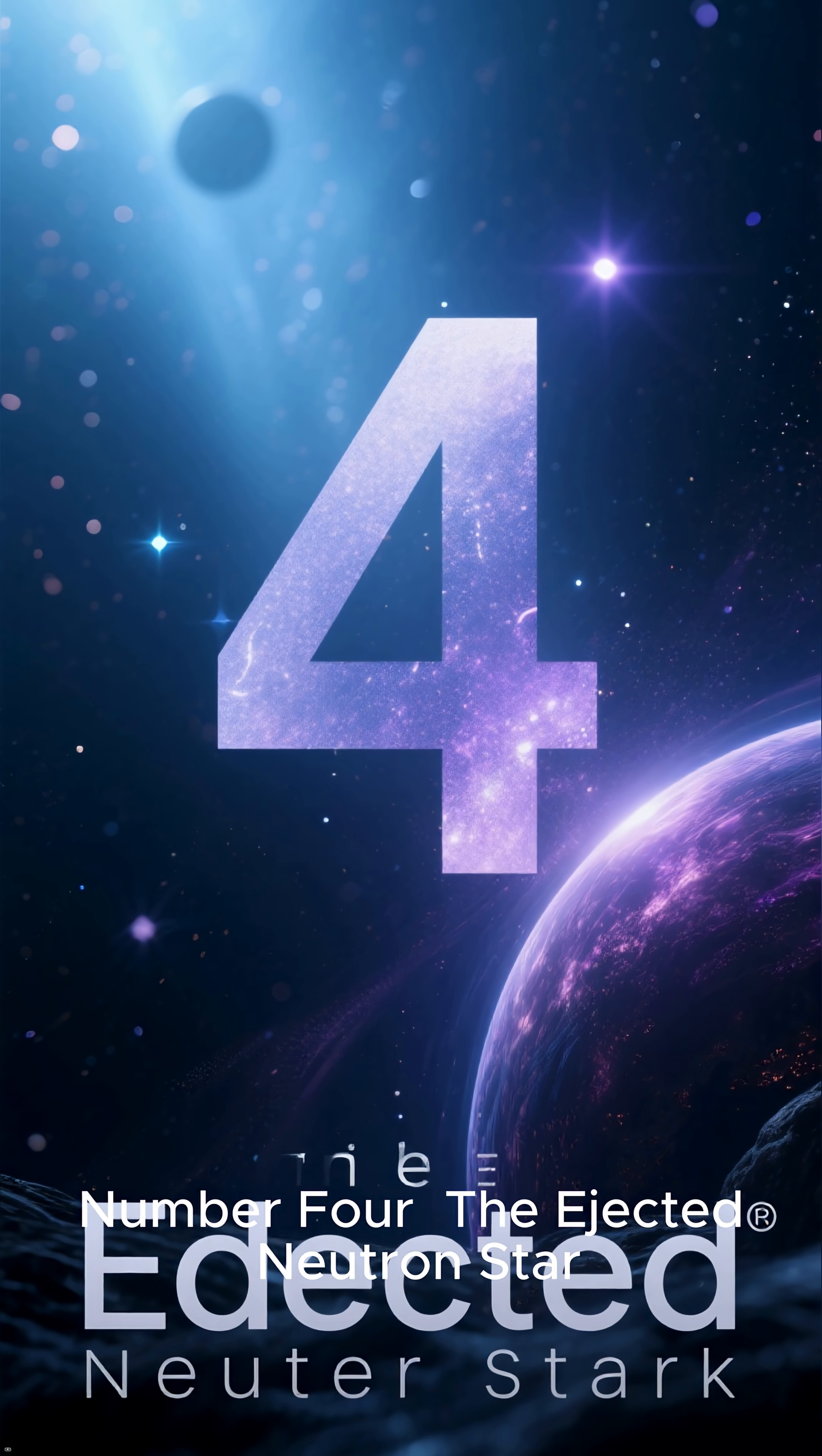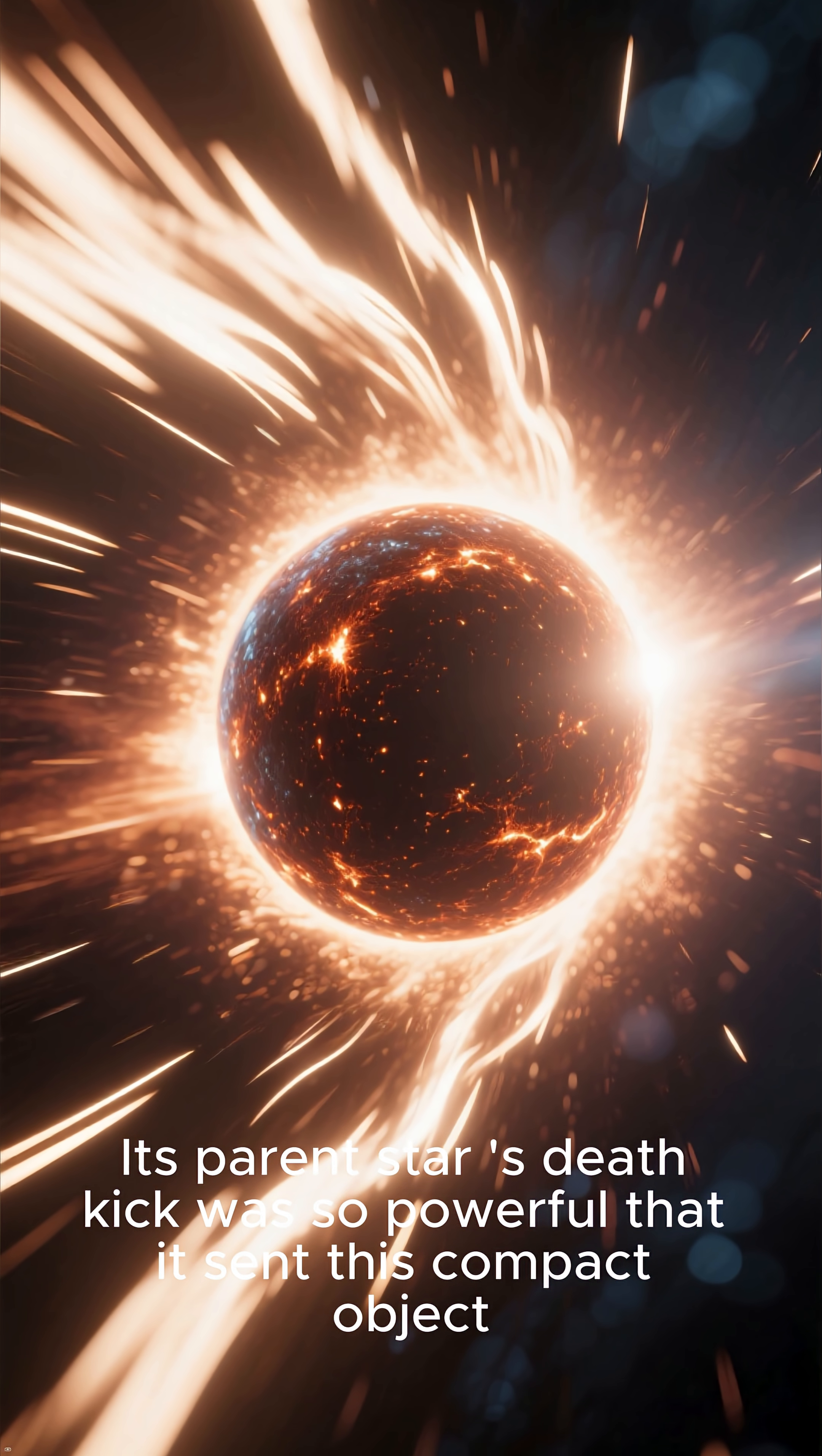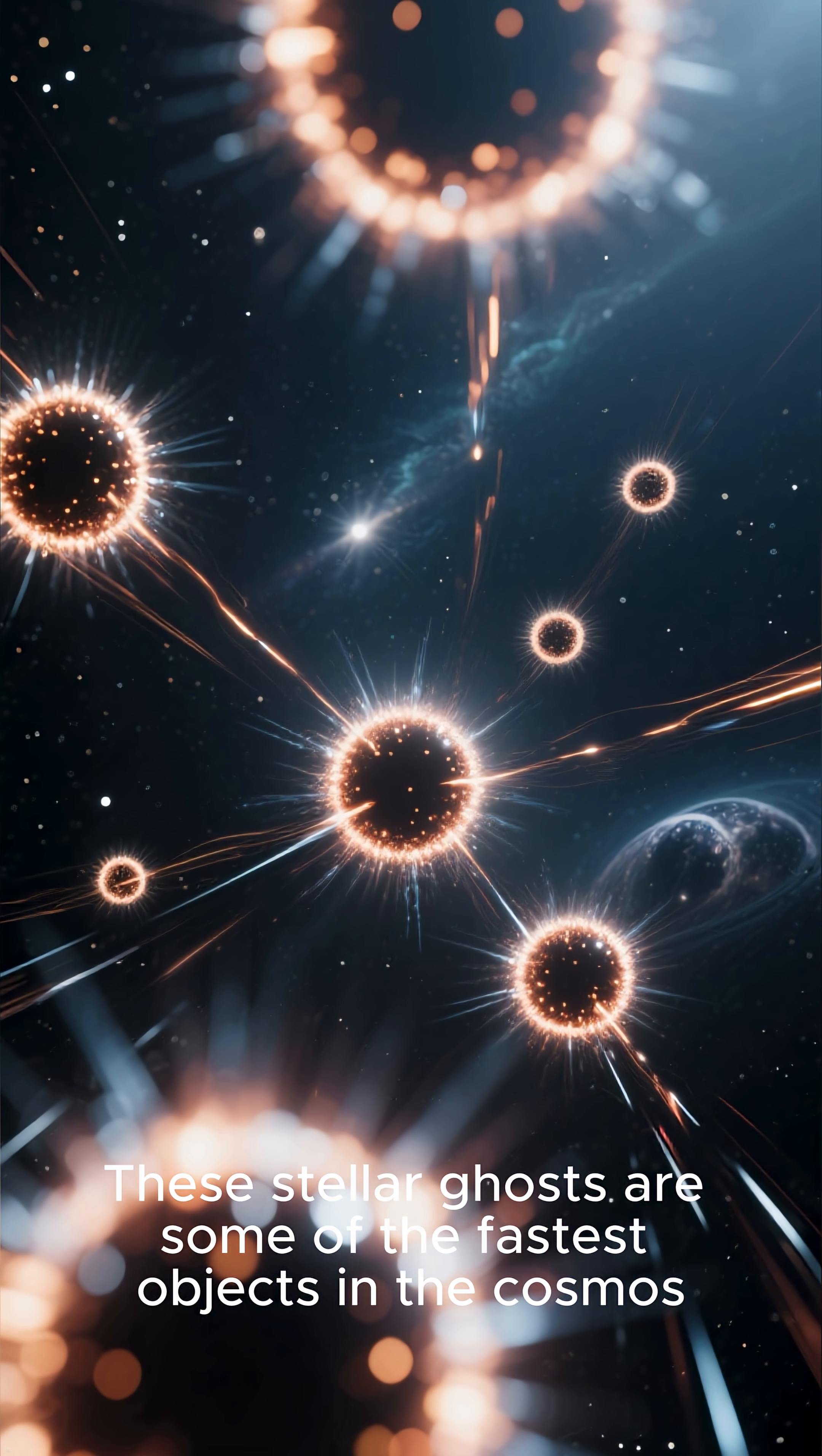Number four: the ejected neutron star. Next, we discover a neutron star, the super-dense remnant of a massive star that exploded as a supernova. Its parent star's death kick was so powerful that it sent this compact object careening through space at thousands of miles per second. These stellar ghosts are some of the fastest objects in the cosmos.